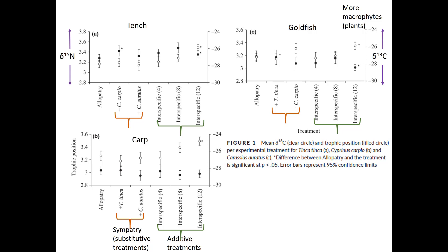Figure 1 is a little complicated — I'll walk you through a few areas. Each panel is for a different species, labeled in the legend. Within each species we've got that species grown allopatrically, with the addition of one species, with the addition of another species, and then grown interspecifically at three different levels.